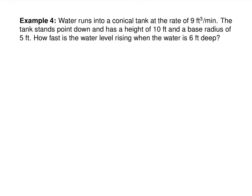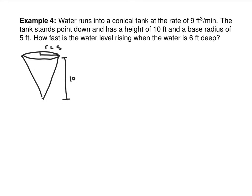The next one is a conical tank. Water runs into a conical tank at a rate of 9 cubic feet per minute. The tank stands point down and has a height of 10 feet and a base radius of 5. These problems always make me think of being in Minnesota at harvest time — they had cone-shaped things to collect corn. You can think of it as a really big snow cone.